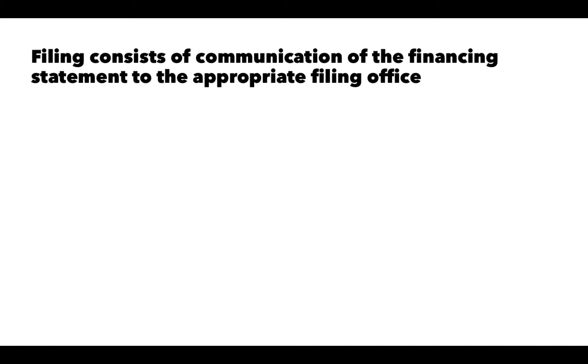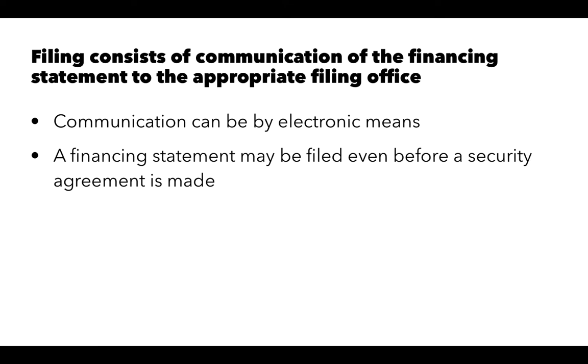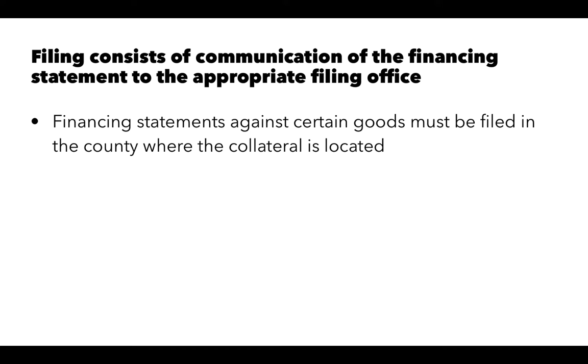The financing statement has to be filed. Filing consists of communication of the financing statement to the appropriate filing office. Communication can be by actually taking a physical paper document to the appropriate filing office, or — nowadays — most communication is done by electronic means. In fact, a financing statement can be filed even before a security agreement is made. Financing statements against certain goods must be filed in the county where the collateral is located.